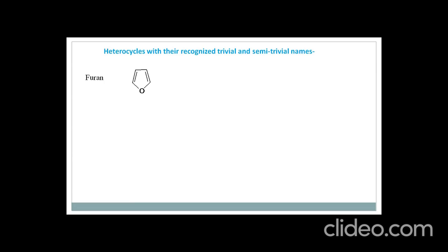First is furan. Furan is nothing but the 5-membered ring having oxygen. Here we give the numbering to this ring, obviously starting from the heteroatom which is oxygen. So here is the numbering to this furan ring.